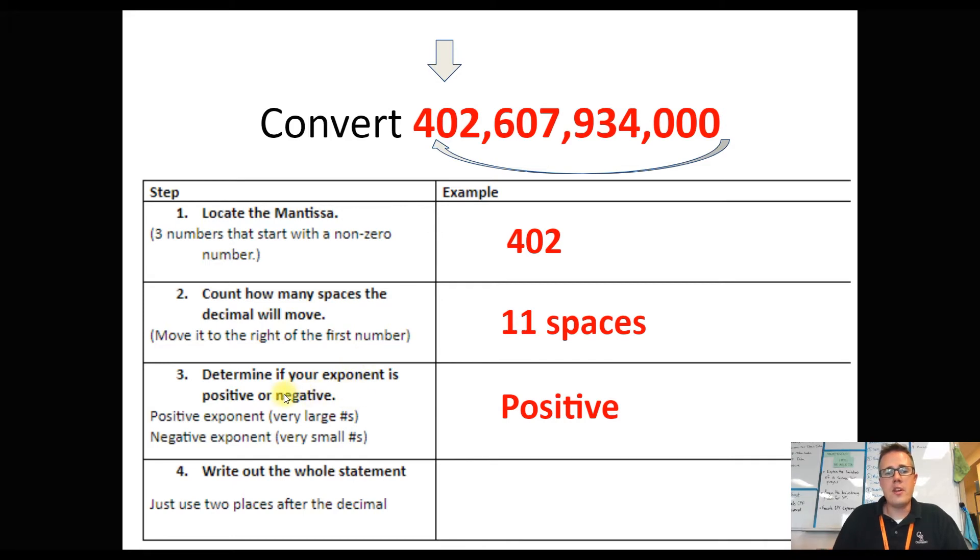Step number three is to determine if our exponent, that's the little number that's going to be up top, is positive or negative. With really big numbers, that's what a positive exponent means. If ever we have a small number, that's when we'll use a negative exponent, and we'll look at one of those in just a second. So because this is a big number, our exponent, the little number, is going to be a positive thing.